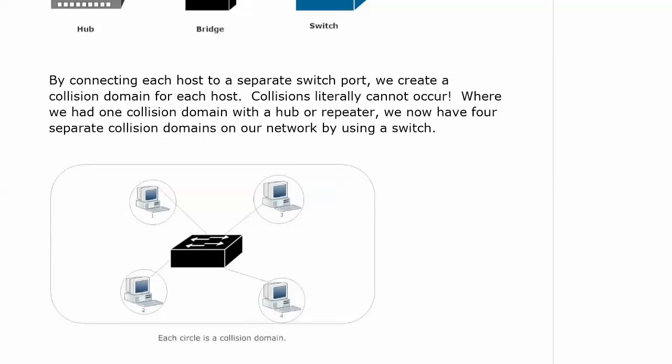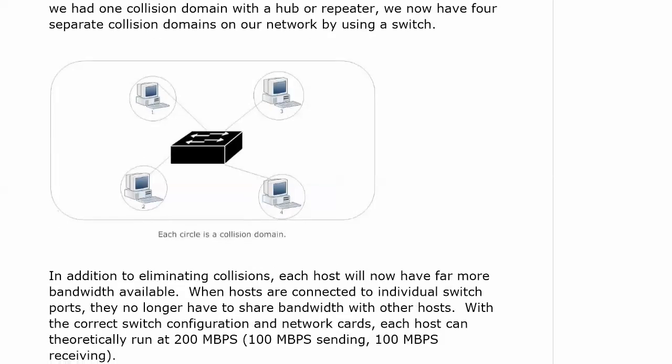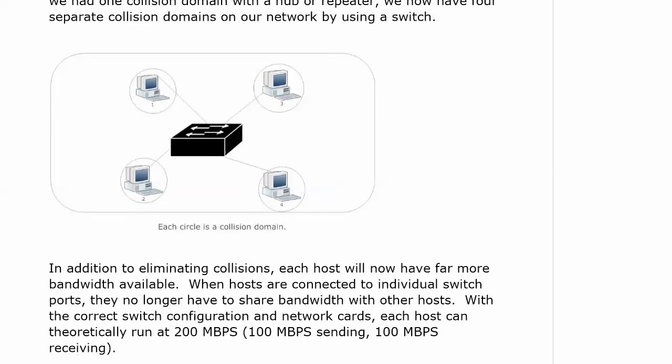One of the best parts about the switch: by connecting each host to a separate switch port, we create a collision domain for each host. Each switch port is its own collision domain. Collisions literally cannot occur. So where we had one collision domain with a hub or repeater, and we could segment the network somewhat with a bridge, we now have four separate collision domains in this particular diagram by using a switch. And even better, in addition to eliminating the collisions, each host is going to have far more bandwidth available, because when hosts are connected to individual switch ports, they don't have to share anymore.